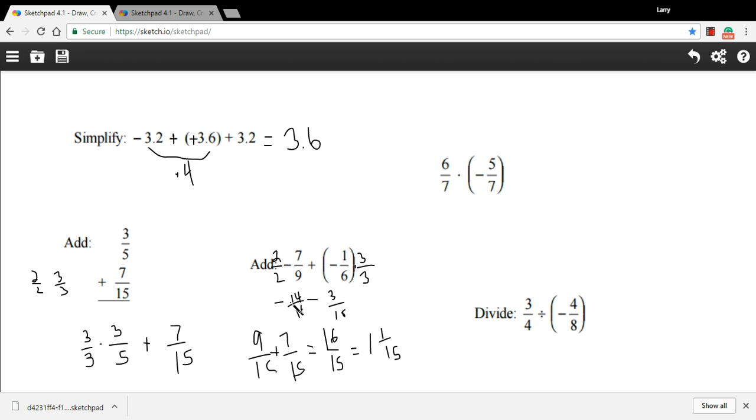We've got negative 14 minus 3, both are eighteenths. So negative 14 minus 3 is negative 17, and we put that over the denominator 18. Negative 17 eighteenths.